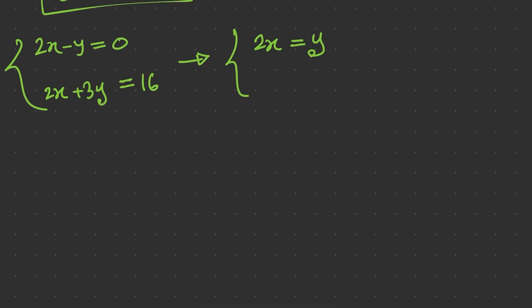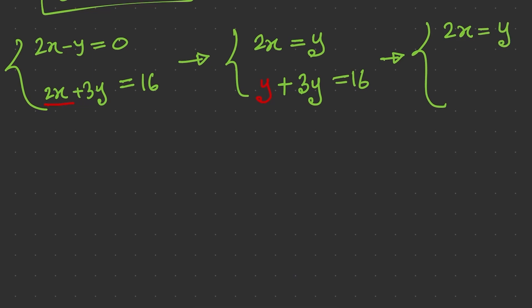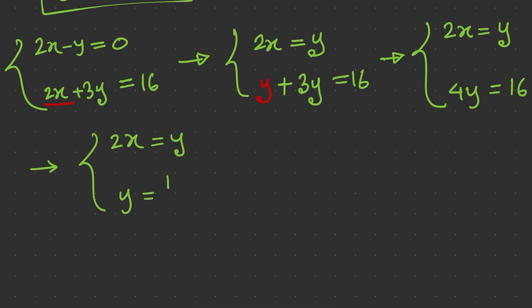Now, the first term in the second equation is 2x, and from the first equation we know 2x equals y. So we substitute: y plus 3y equals 16. Combining gives us 4y equals 16, therefore y equals 16 divided by 4, which gives us y equals 4.